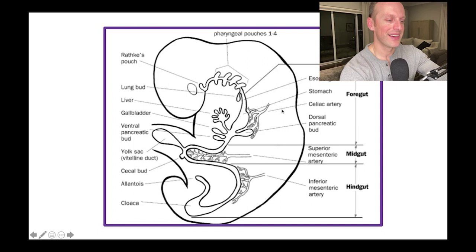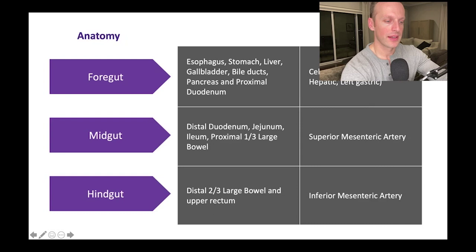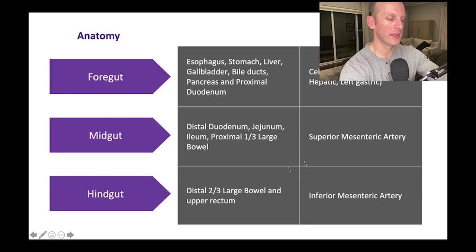The foregut, midgut, and hindgut are defined by the three prominent vessels of the gastrointestinal tract: the celiac artery, the superior mesenteric artery, and the inferior mesenteric artery. The foregut is defined by the celiac axis, whose major branches are the splenic, the common hepatic, and the left gastric. That gives you the distal esophagus, the stomach, the liver, the gallbladder, bile ducts, pancreas, and the proximal part of the duodenum. The midgut is more distal duodenum, jejunum, and the proximal one-third of the colon, supplied by the superior mesenteric artery. The distal one-third of the large bowel and upper rectum is supplied by the inferior mesenteric artery.